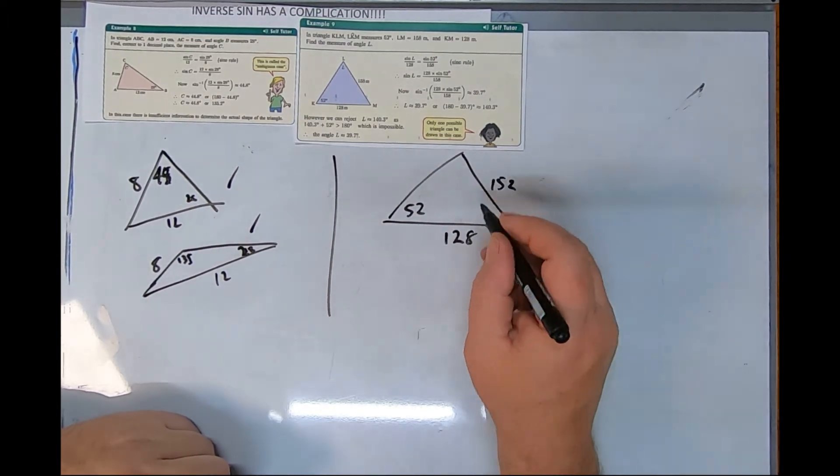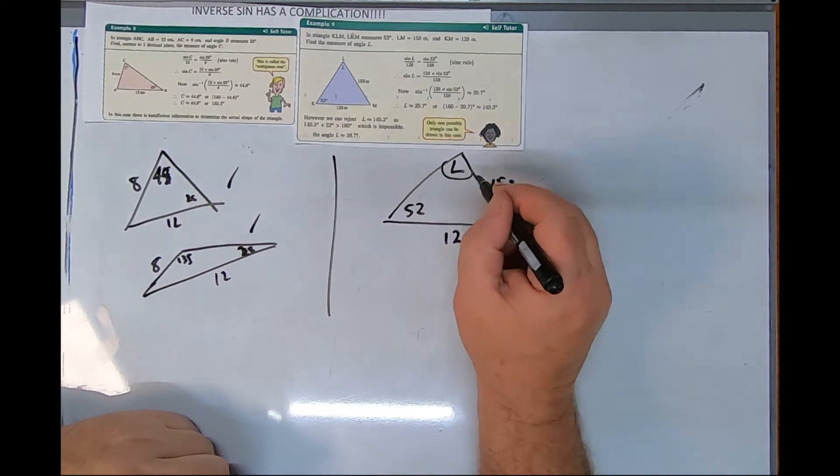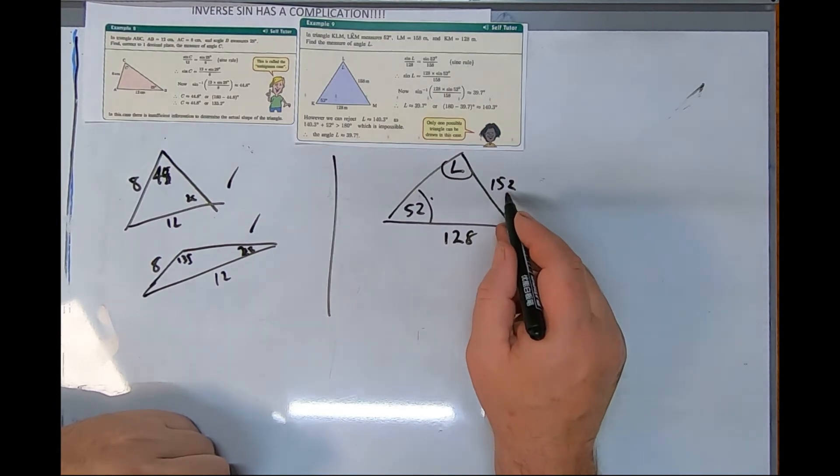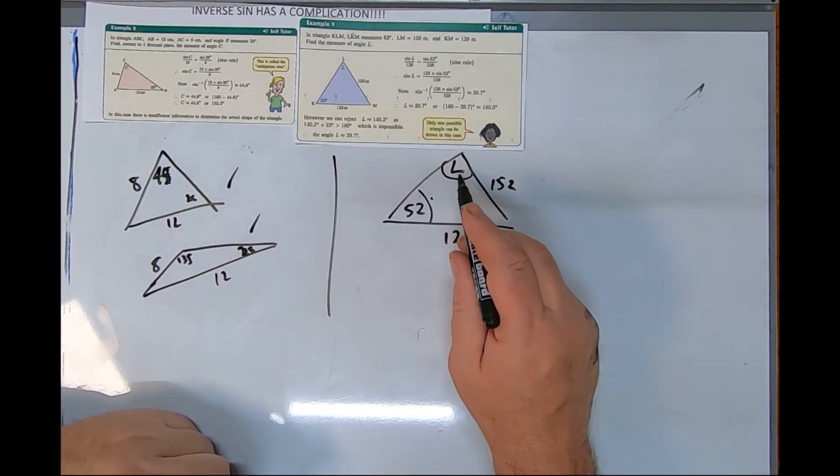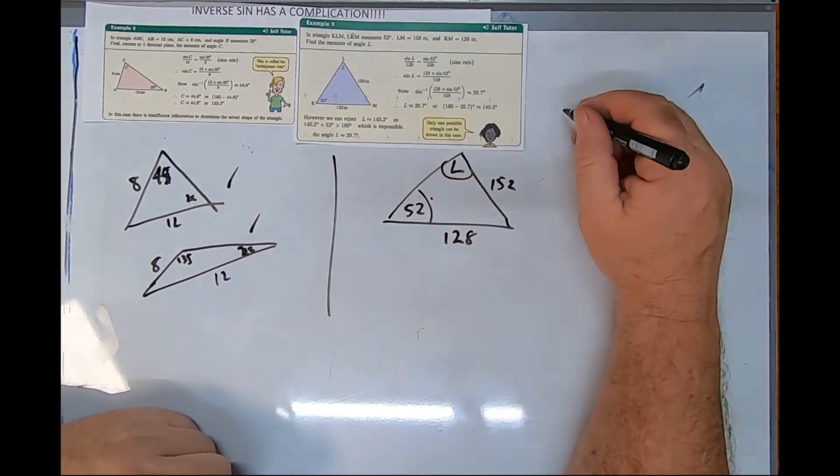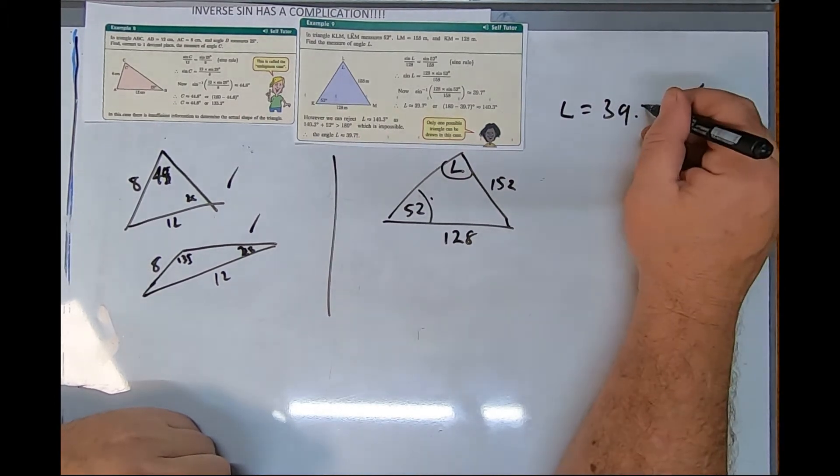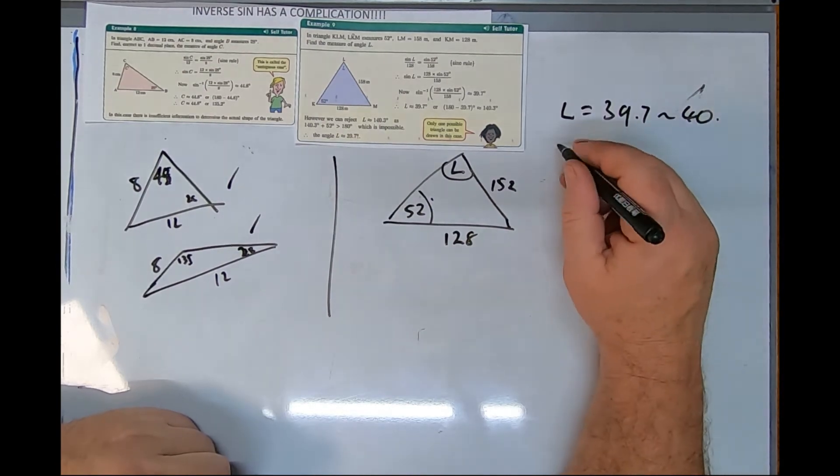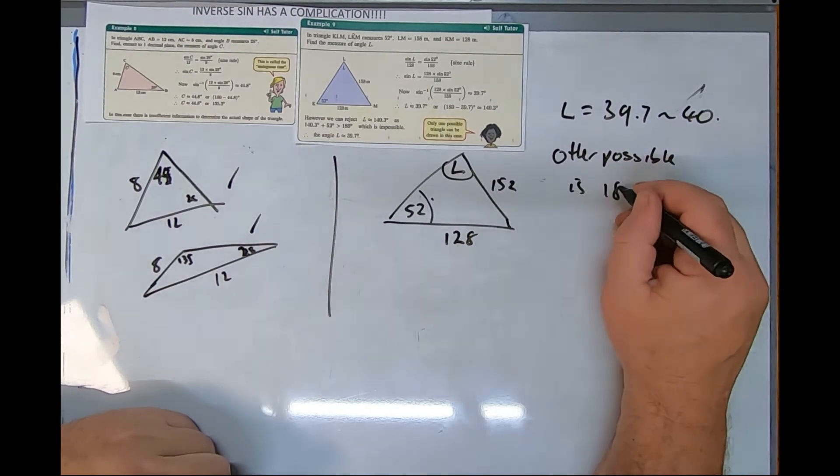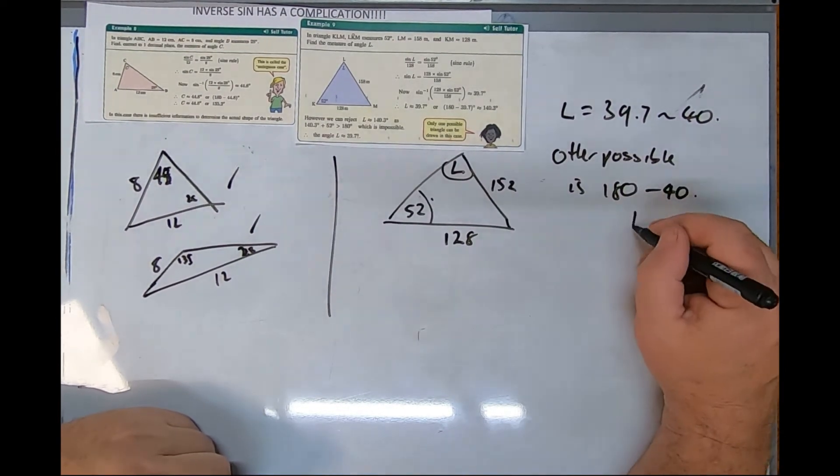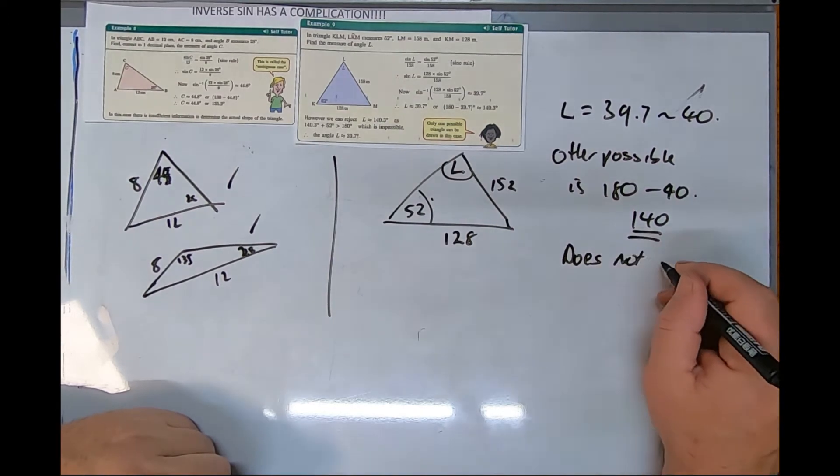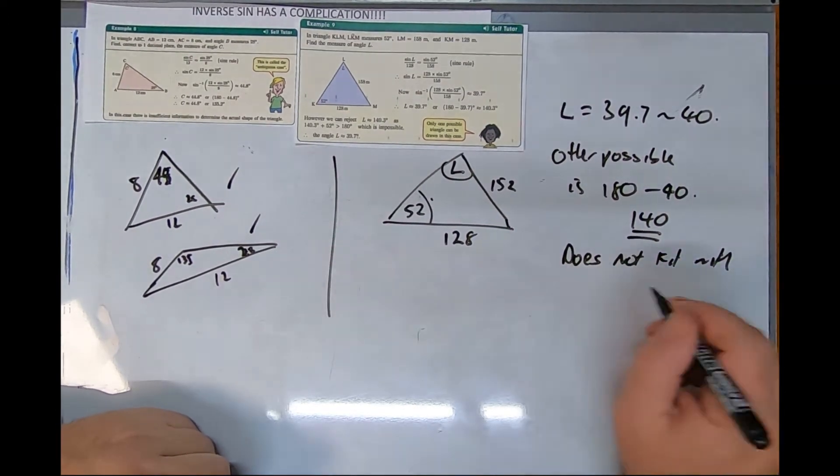If we look at the second picture we were given, here's another one. Here's the 52, that's 152, here's 128, here's L. We know the biggest angle is opposite the bigger side. This side is 152, so angle L has to be less than 52. From the algebra we get this equals 39.7 or around 40.